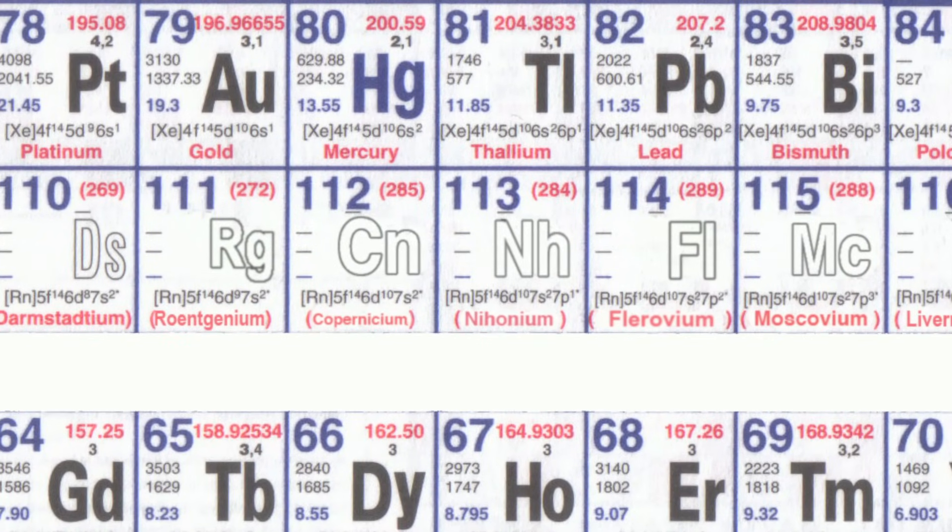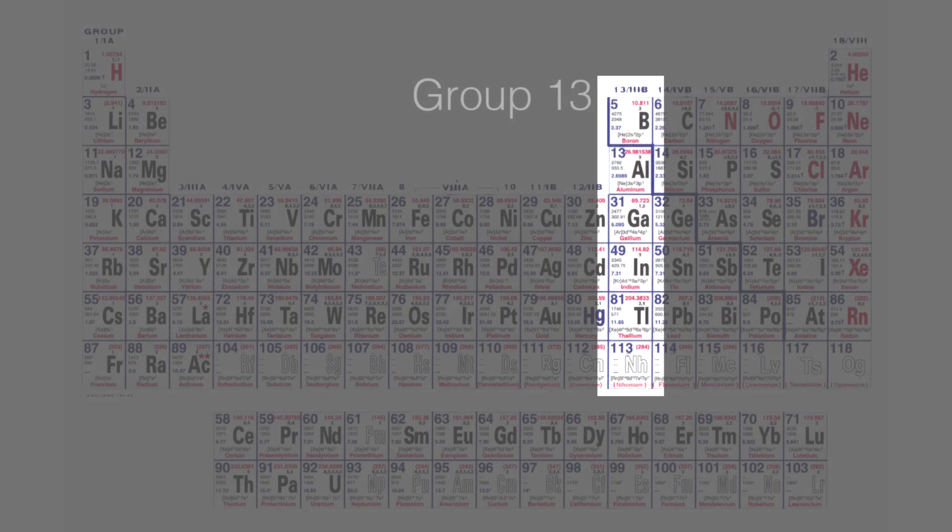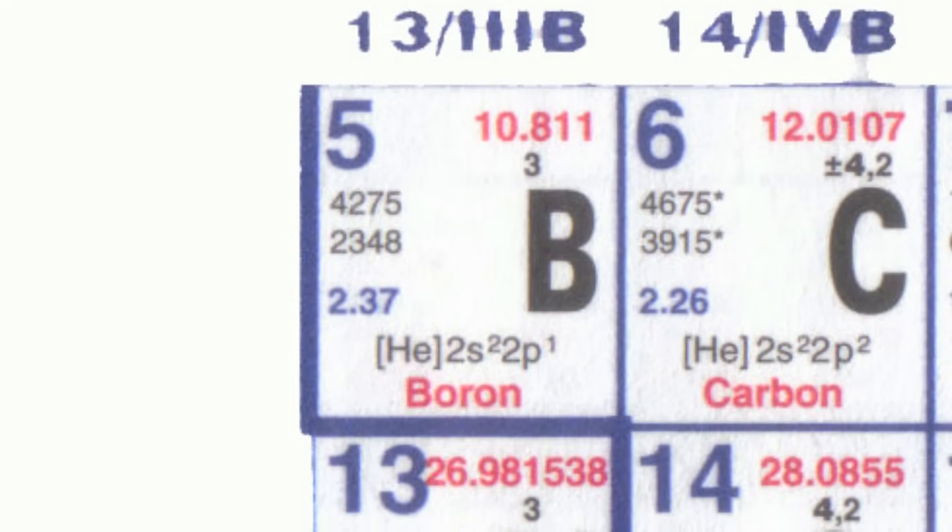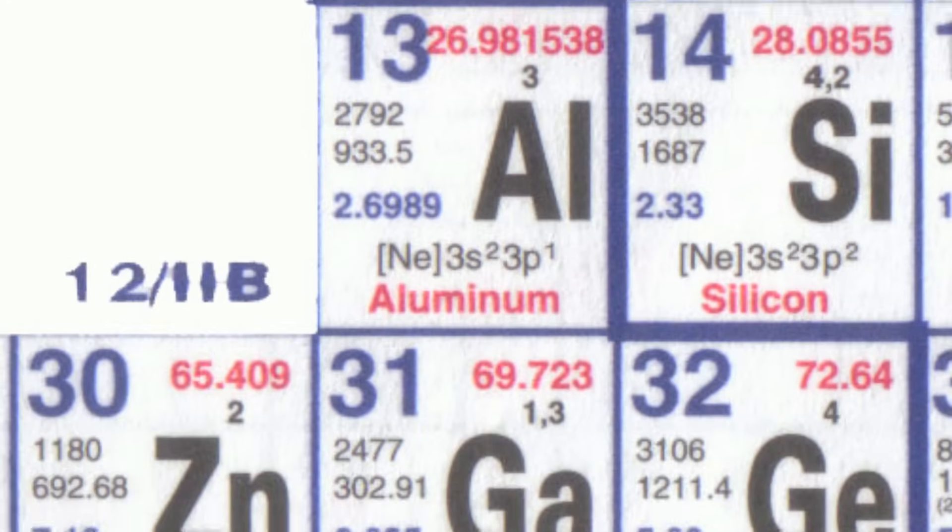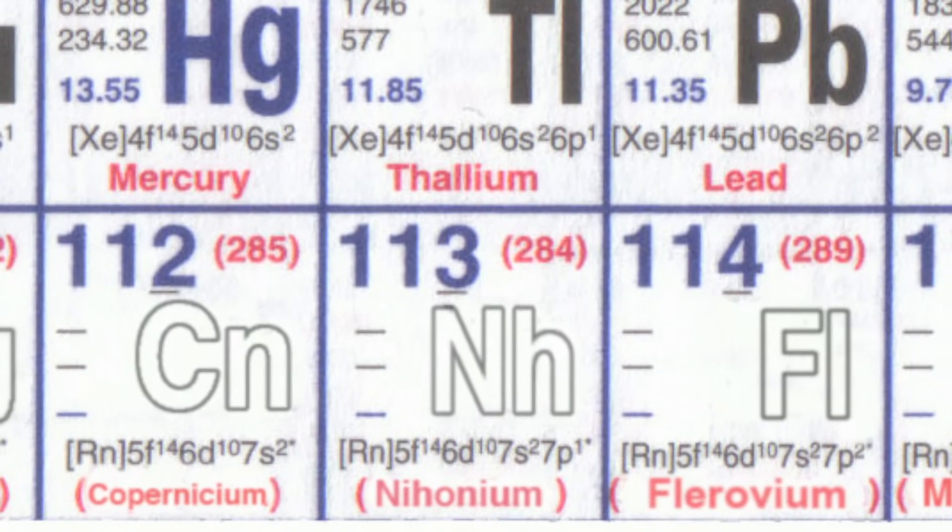This part of the periodic table is really unusual because just by chance, element 113 is in group 13. It's just below thallium, and we know quite a lot about the chemistry of thallium, particularly that it's very poisonous.